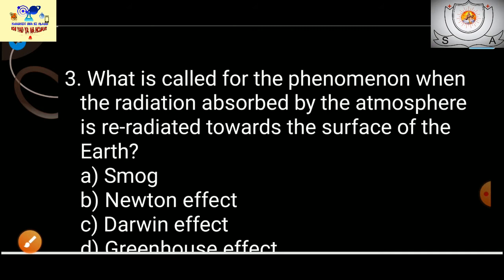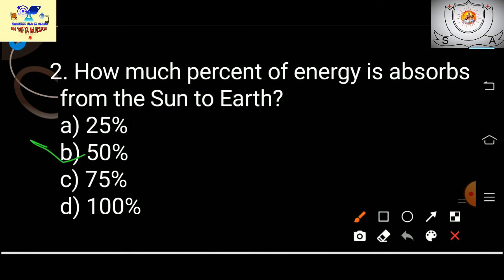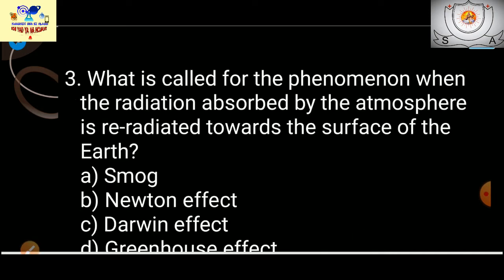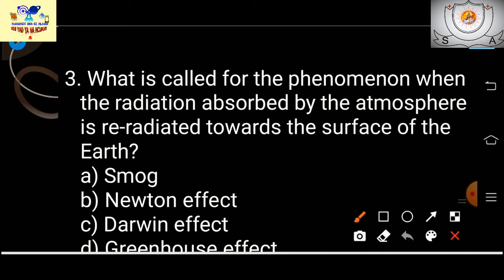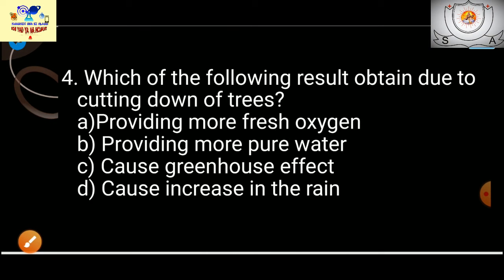Question 3: What is the phenomenon called when radiation absorbed by the atmosphere is re-radiated towards the surface of the earth? The answer is greenhouse effect — when radiation is absorbed and then radiated back again.